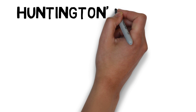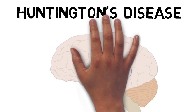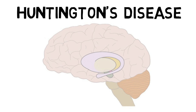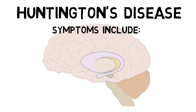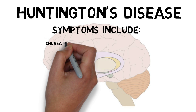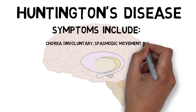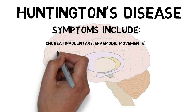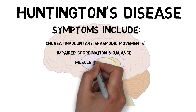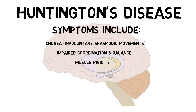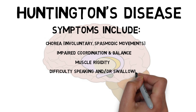The symptoms of Huntington's disease typically emerge during middle age, and at first often involve subtle changes in personality, cognition, and movement. Eventually, the symptoms progress into substantial movement problems, like chorea, which involves uncontrolled spasmodic movements, impaired coordination and balance, muscle rigidity, and difficulty speaking and/or swallowing.